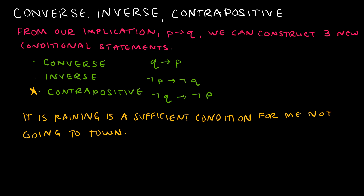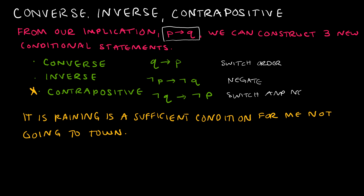Now let's talk about the converse, inverse, and contrapositive — three more conditional statements we can construct from the original implication 'if p then q.' We either negate the propositions, switch the order, or possibly both. The converse is 'if q then p' — just switching the order. The inverse is 'if not p then not q' — same order, but both negated. The contrapositive is 'if not q then not p' — switch and negate, the whole ball of wax.